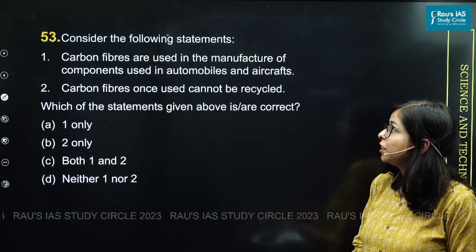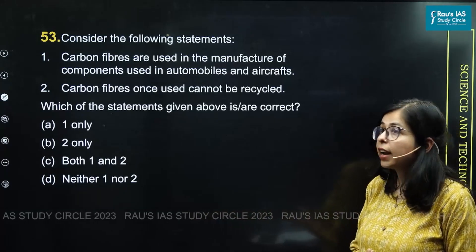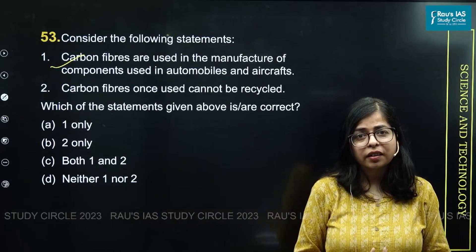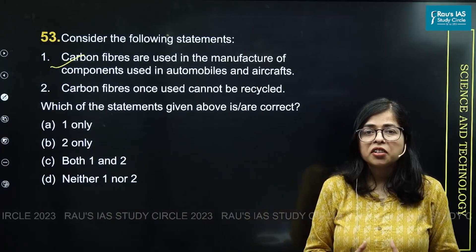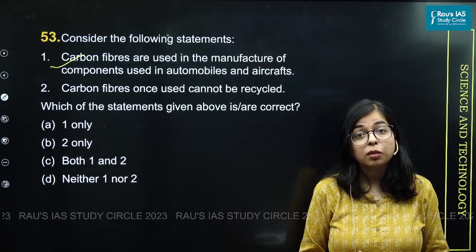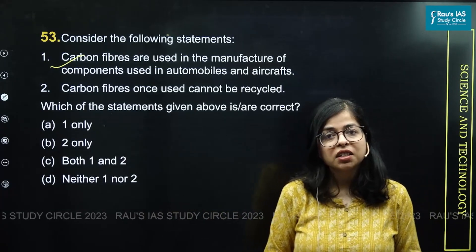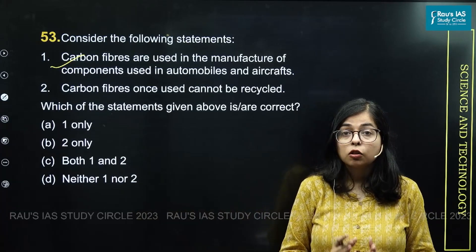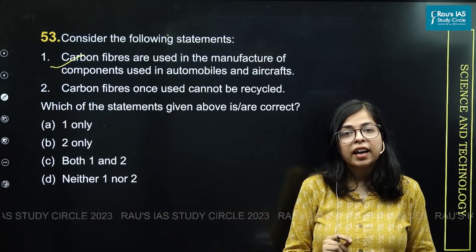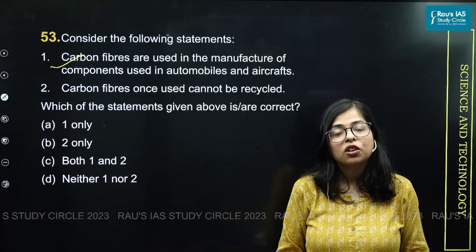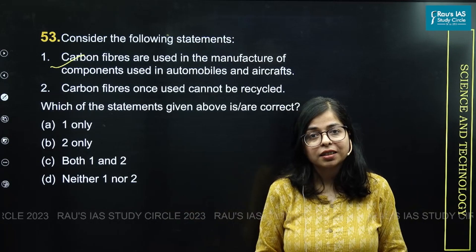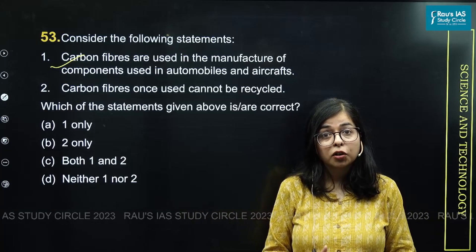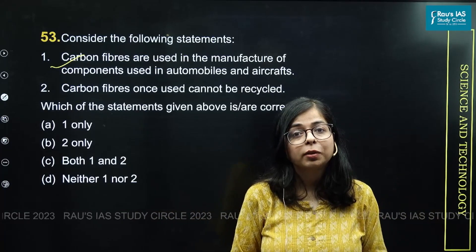Carbon fibers are used in the manufacture of components used in automobiles and aircraft. This is a correct statement. Carbon fiber is a reinforced plastic or polymer — a new class of materials becoming increasingly popular due to its unique properties: high specific strength, low corrosiveness, and low density or lightweight. Because of these properties, they are replacing traditional materials such as aluminum and steel, becoming popular in industries like aircraft, automobile, and shipping, and are also being used in the renewable energy sector.